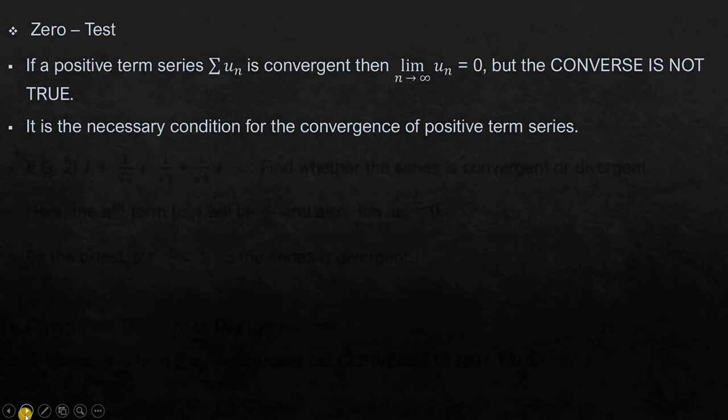Next is the zero test. It states that if a positive term series sigma u_n is convergent, then the limit n tending to infinity u_n will be equal to zero, but the converse is not true. So we can say that the necessary condition for the convergence of positive term series is that limit n tending to infinity u_n must be equal to zero. It should be noted that it is the necessary condition but not the sufficient condition for convergence.